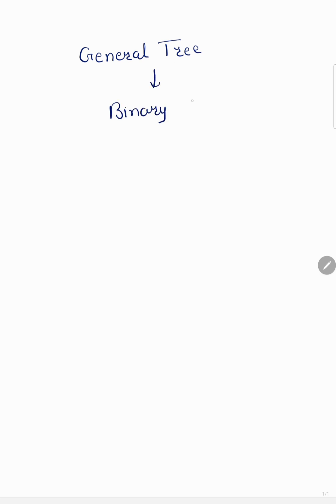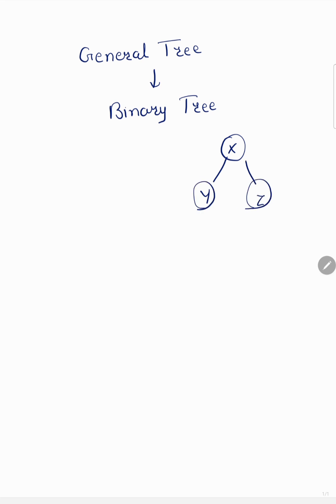In this lecture we are going to learn about conversion from general tree to binary tree. First, you must be aware of what a binary tree is. A binary tree is data stored in a hierarchical structure in the form of a tree, where each node can have at most two children — either zero, one, or two.